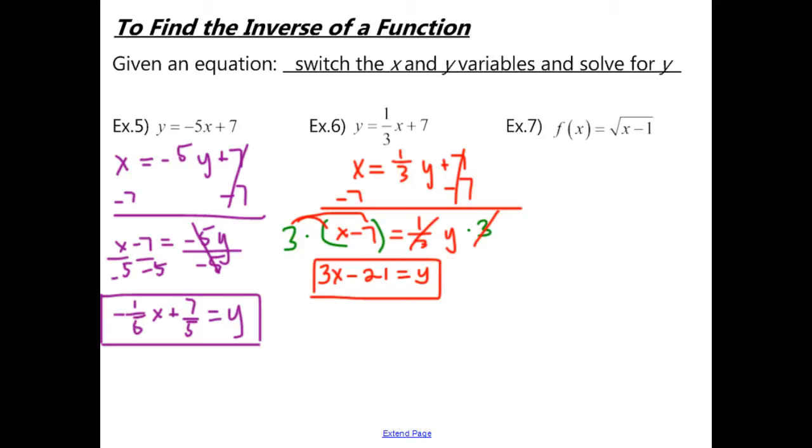Now let's walk through this last one together. So we see this f of x. That actually stands for our y. So when we switch our variables, we're going to do the same thing. We'll make this y minus 1. And then to get rid of the square root, we need to square both sides.